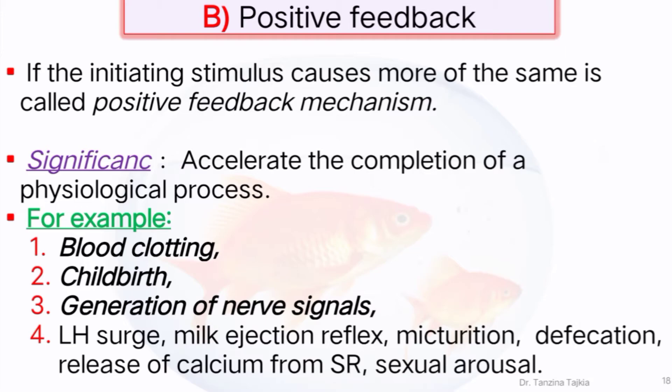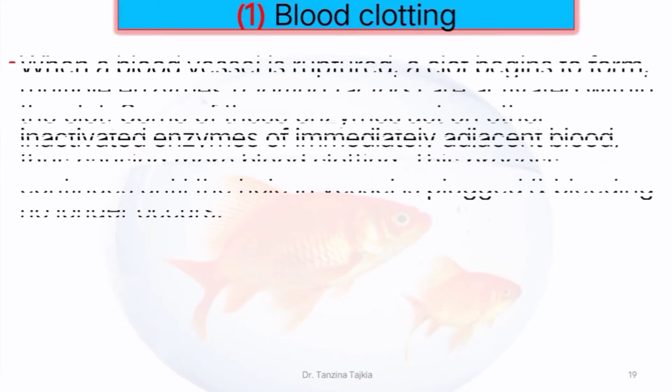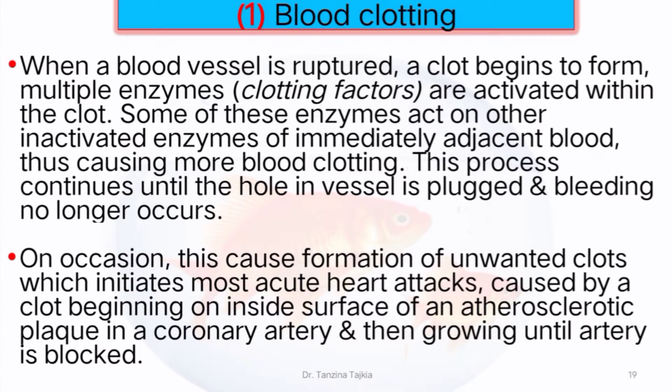First, blood clotting: when a blood vessel is ruptured, a clot begins to form. Multiple enzymes called clotting factors are activated within the clot. Some of these enzymes act on other inactivated enzymes in the immediately adjacent blood, causing more blood clotting. This process continues until the hole in the vessel is plugged and bleeding no longer occurs. On occasion this causes formation of unwanted clots, which initiates most acute heart attacks — caused by a clot beginning on the inside surface of an atherosclerotic plug in a coronary artery and then growing until the artery is blocked.